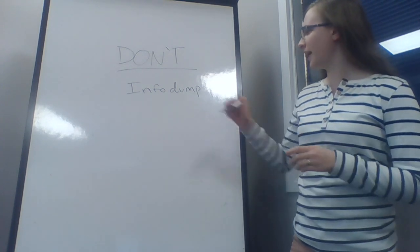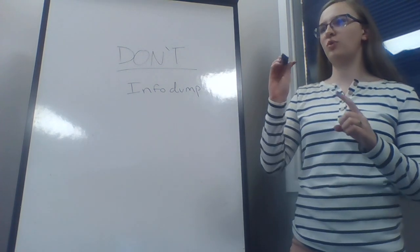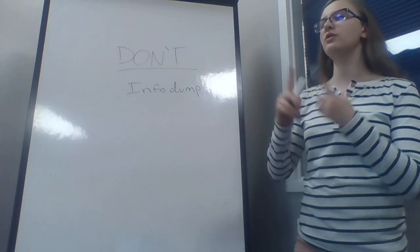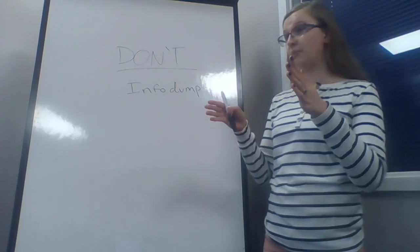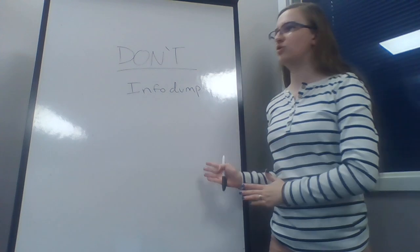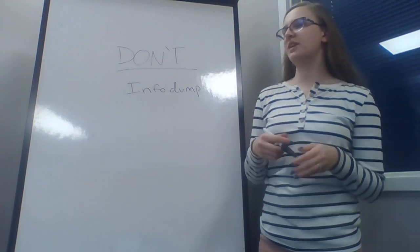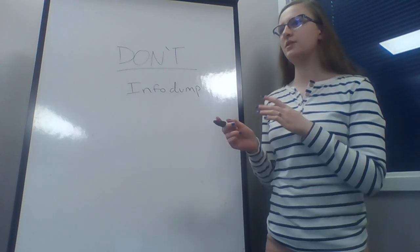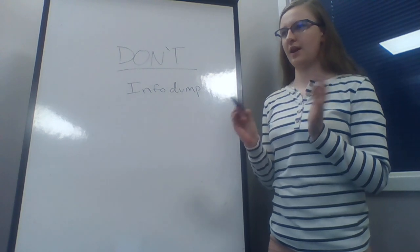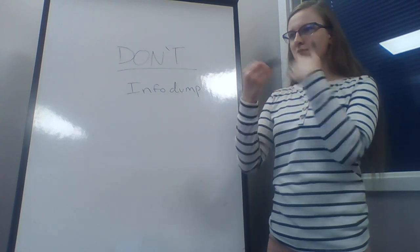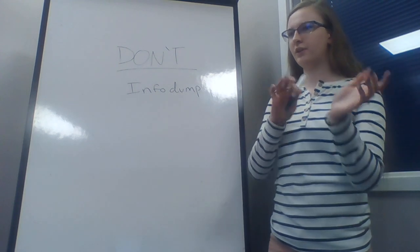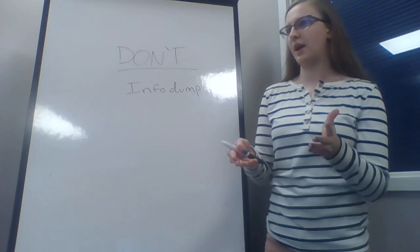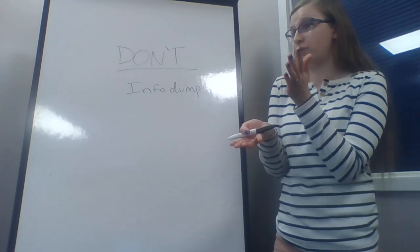Info dumping can be done well, but you have to do several different things. One, you have to chunk it up — take little bits throughout. For example, Harry Potter knows nothing about magic. That's part of the reason J.K. Rowling was able to give little tips and tricks here and there via Ron and Hermione, who know this world better than he does.